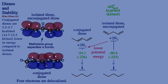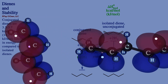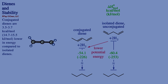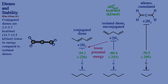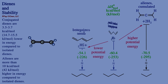We now have one more diene class to consider: allenes. Let's remove the ball-and-stick models of isolated and conjugated dienes and place an allene on the screen. When we hydrogenate allene, it releases a large amount of energy — 70.5 kilocalories per mole. This diene is over 10 kilocalories per mole higher in energy than our isolated diene. This is also a general trend: allenes are significantly higher in potential energy than conjugated and isolated dienes.